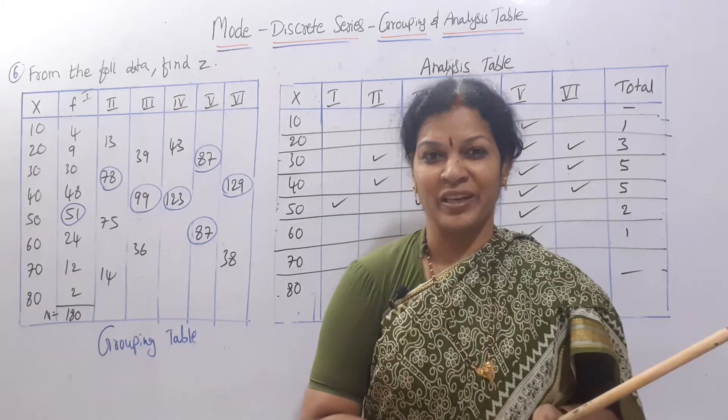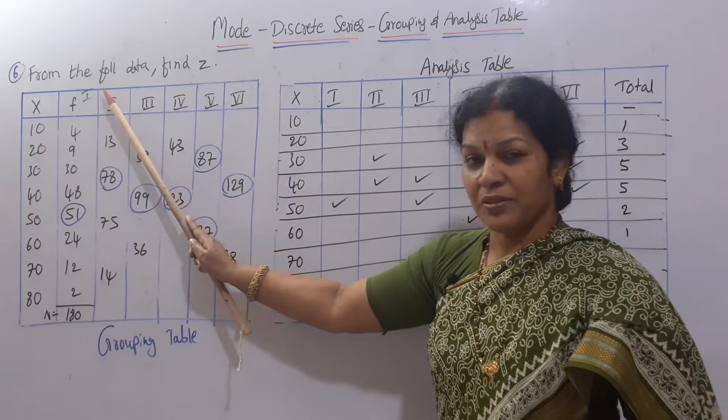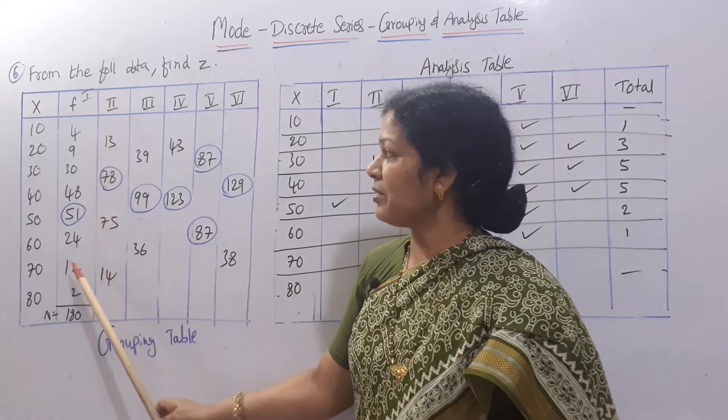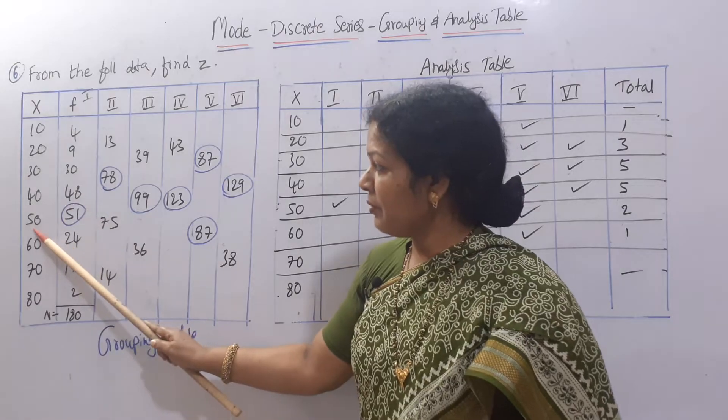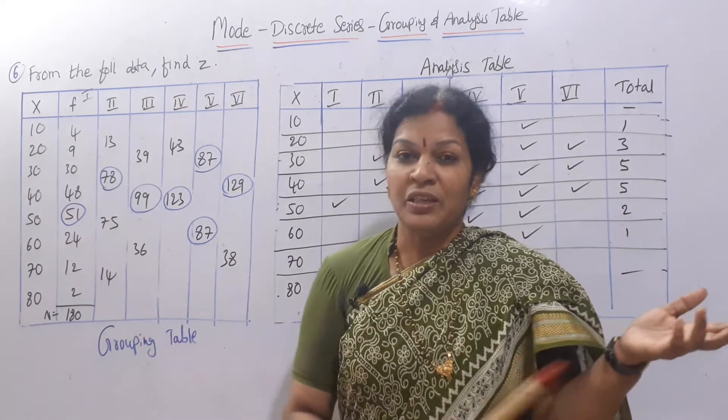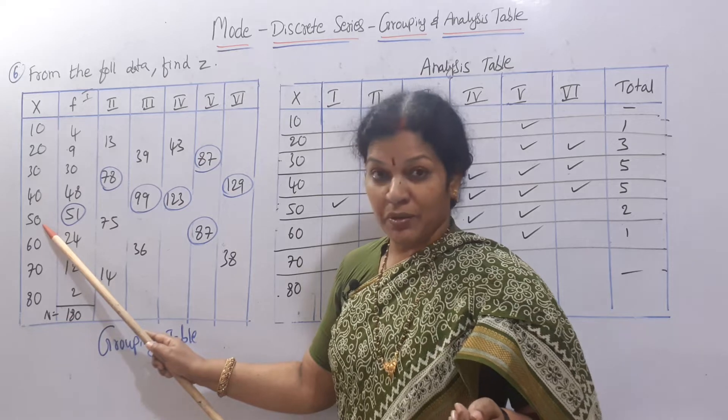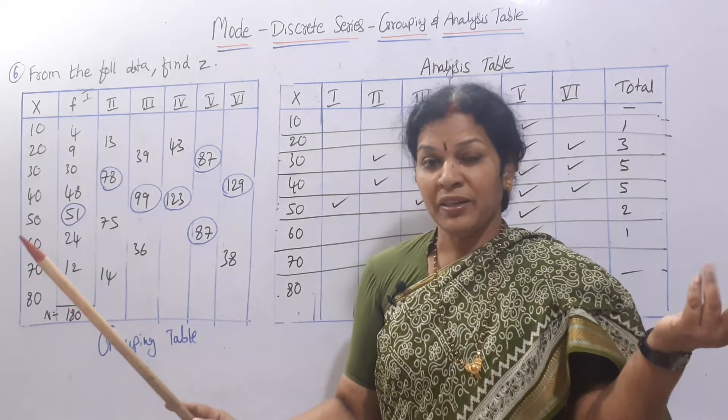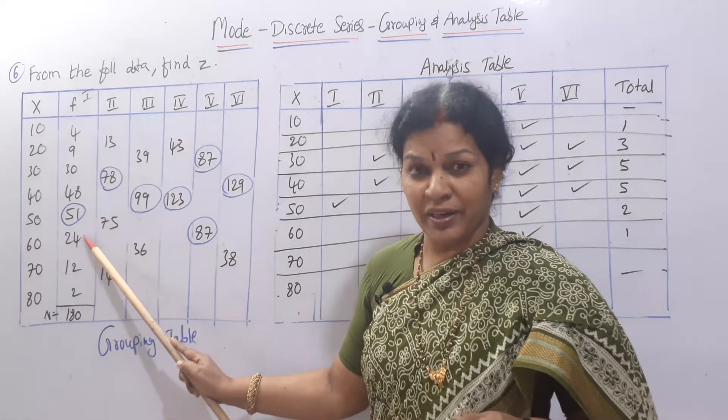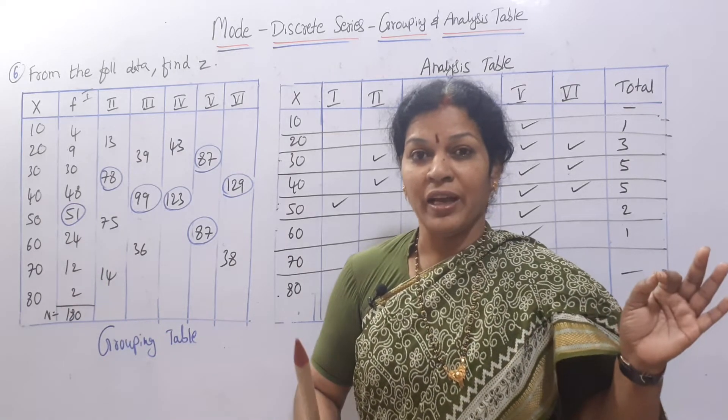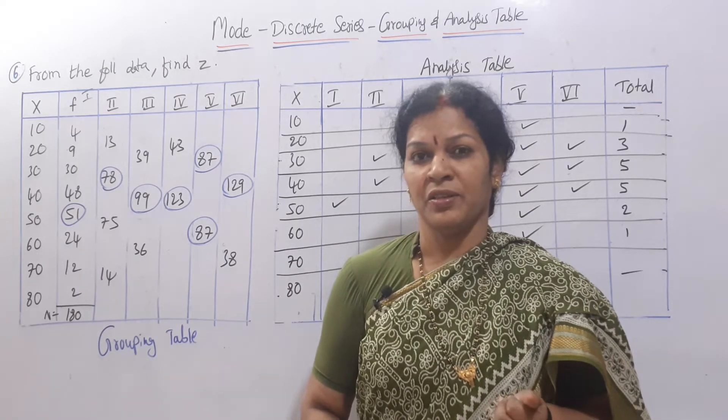So that is mode is equal to 3 median minus 2 mean. Now see the problem. From the following data find mode. The problem is given like this: X and frequency. In frequency, what is the highest data? 51 means 50 is repeating 51 times. Generally by inspection mode lies in 50, but if you see the next highest number is 48, which is very much nearer to 51. That is why we have to prepare the grouping analysis table.